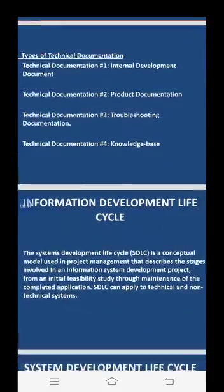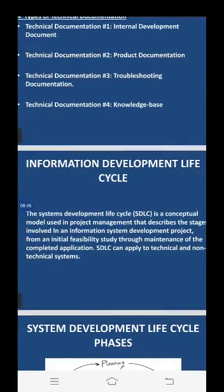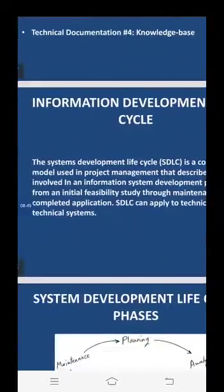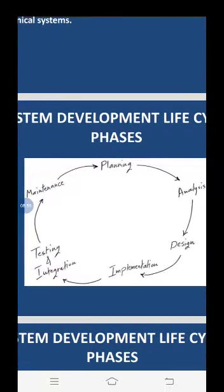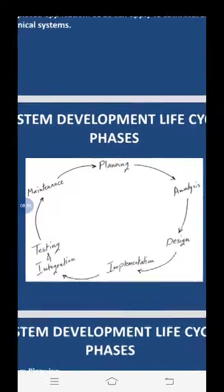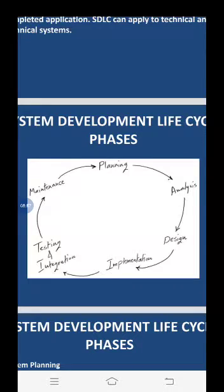Next we move on to the system development life cycle phases. Here is a diagram depicting the phases of the system development life cycle: after planning comes analysis, then design, then implementation, followed by testing and integration, and finally maintenance.